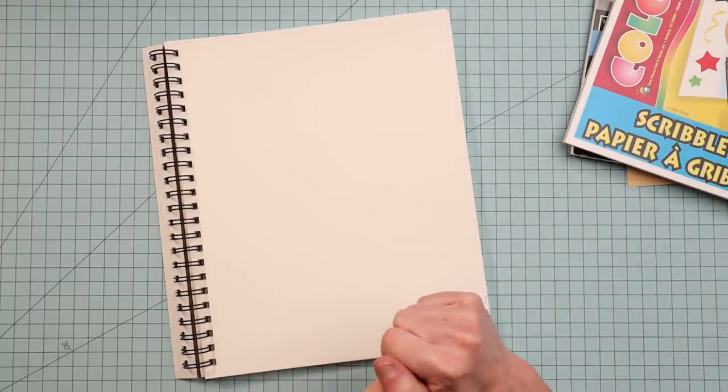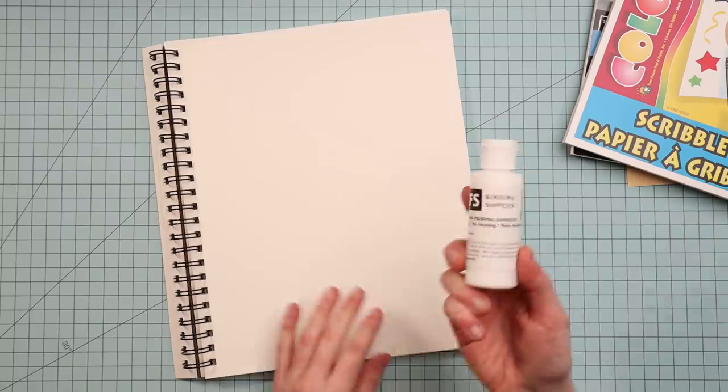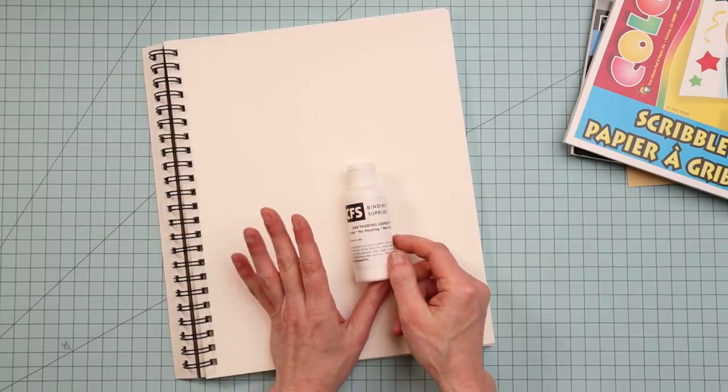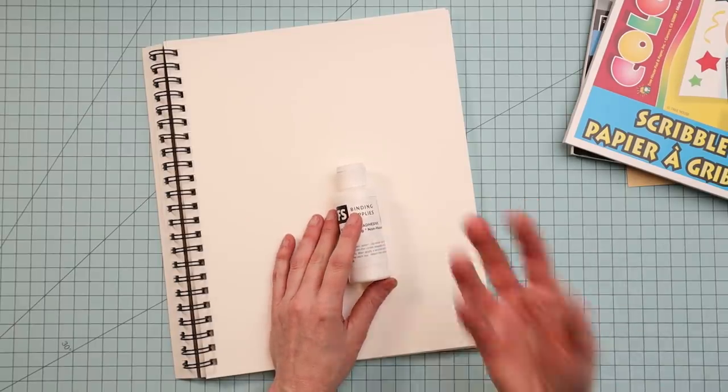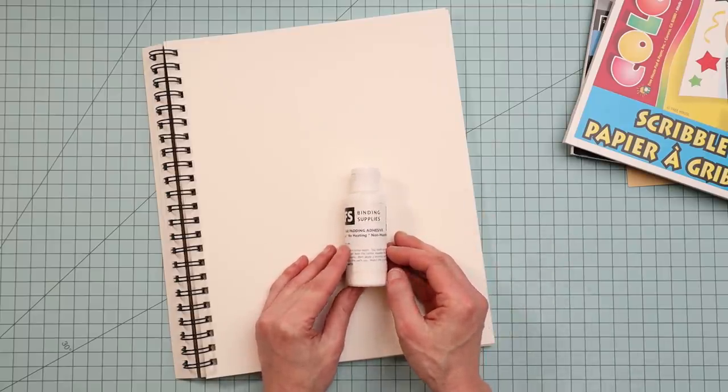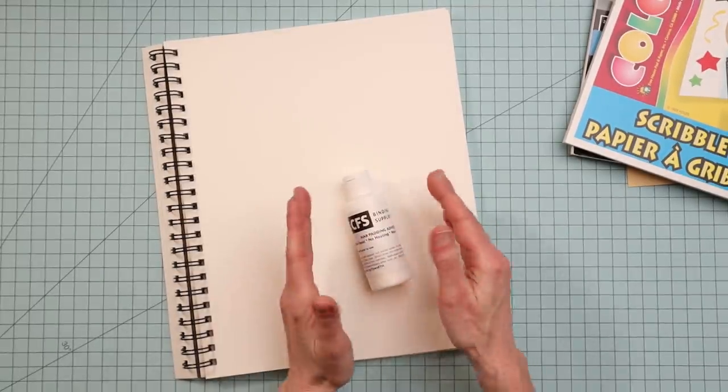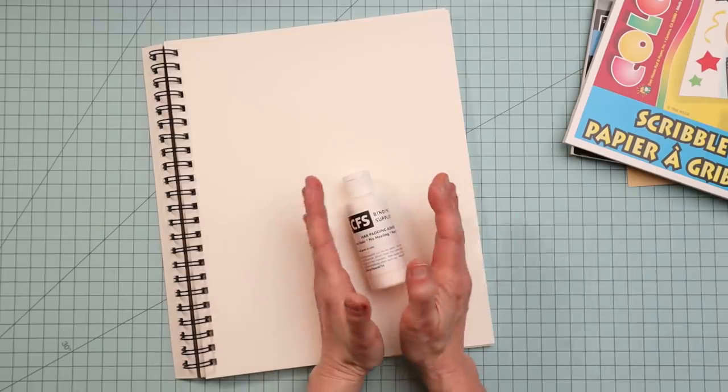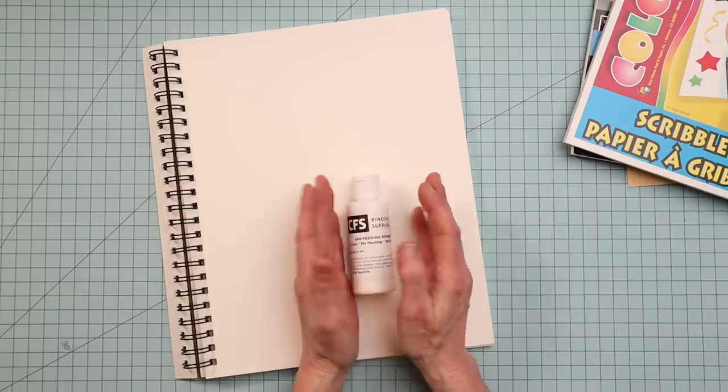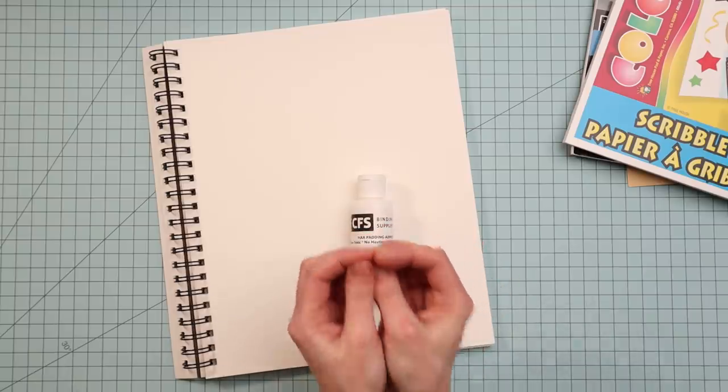The durability will be on a couple of different things. It will be on the kind of adhesive you use, and I recommend getting a padding medium that is made for perfect binding and not just using a regular white glue. You can, it just might not last as long or it might not take as much abuse as a real padding adhesive will take. Another thing is, the way that you glue your perfect binding together, if you do a method called the double fan method, that gets more glue into the tops of those papers, it's going to hold together a lot better.